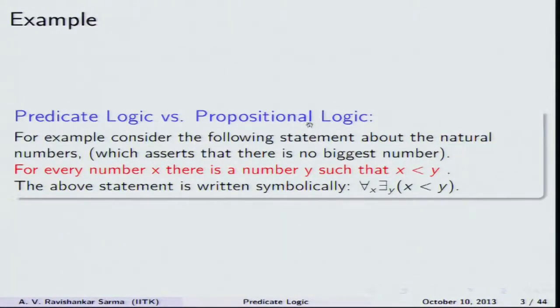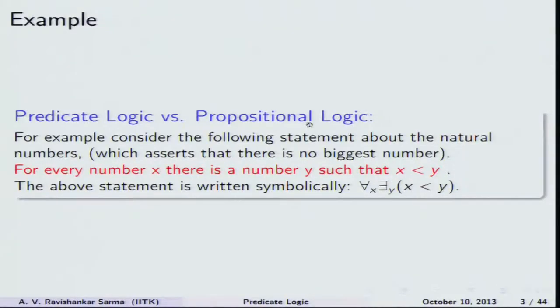To consider a simple example: 'for every number X there is a number Y such that X is less than Y.' For example, in the natural numbers 1, 2, 3, 4, 5, 6, etc., for any number you take, say 2, there will always be one number bigger than it — 2 is always less than 3, 3 is always less than 4. These kinds of sentences require us to invoke relations between individual terms X and Y, and if you represent them in propositional logic, it may not capture the deep structure of this sentence. It is simply represented as some letter P.